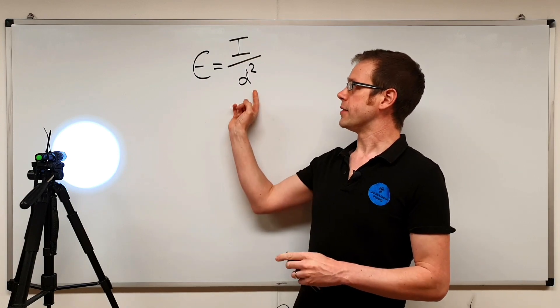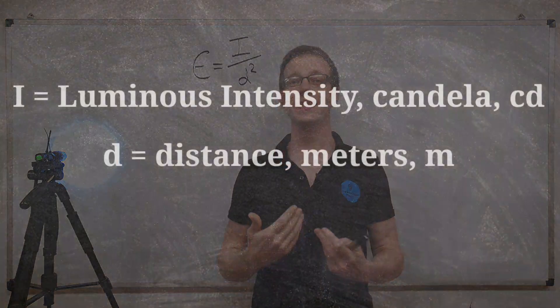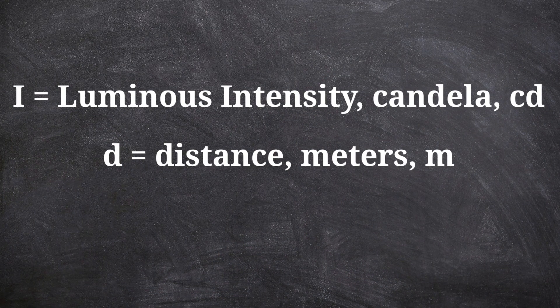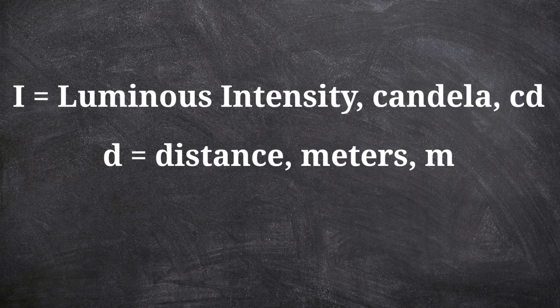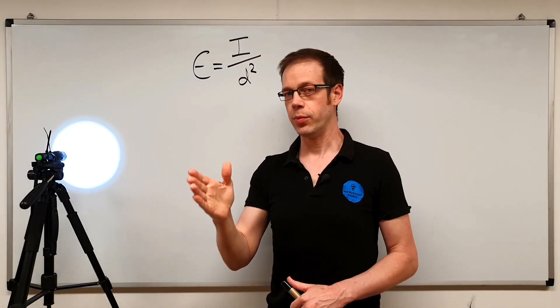We've then got this letter D here. The D is really easy for us to understand. It just means distance, basically the distance from the light source to the surface that is being illuminated. Under the SI system, that is measured in meters. Now it's interesting we've got this squared here, and we'll talk about why that's so important in a moment.